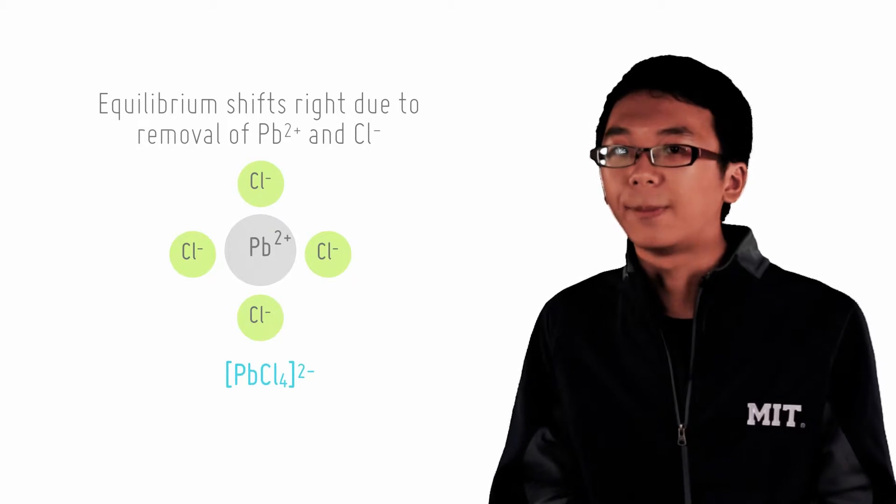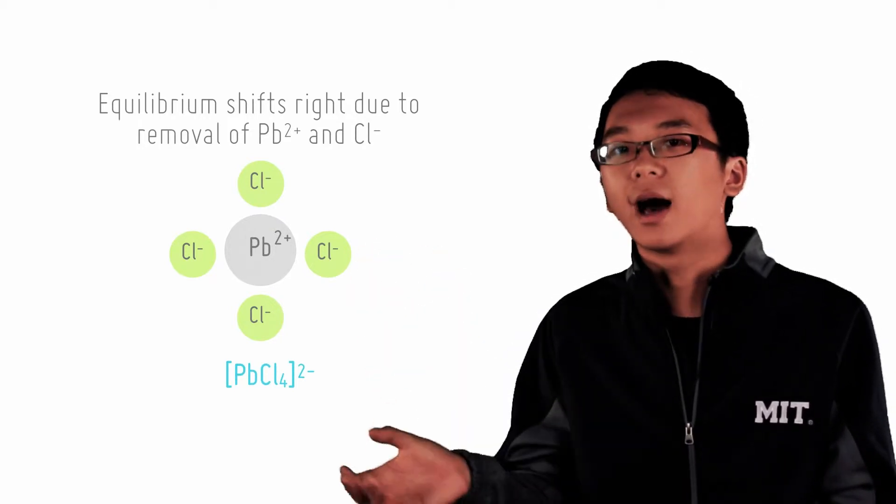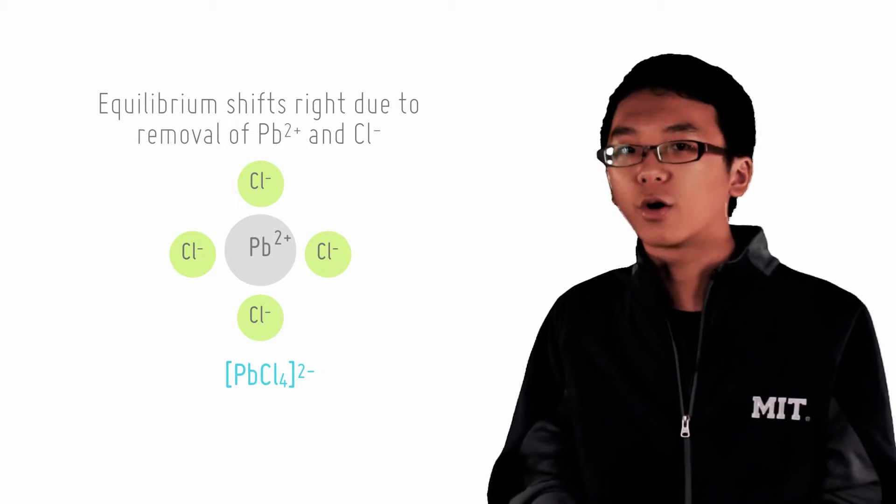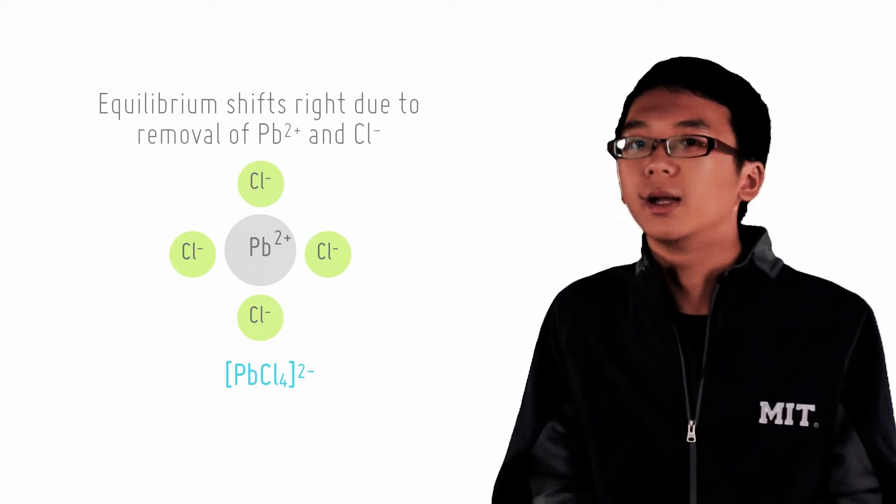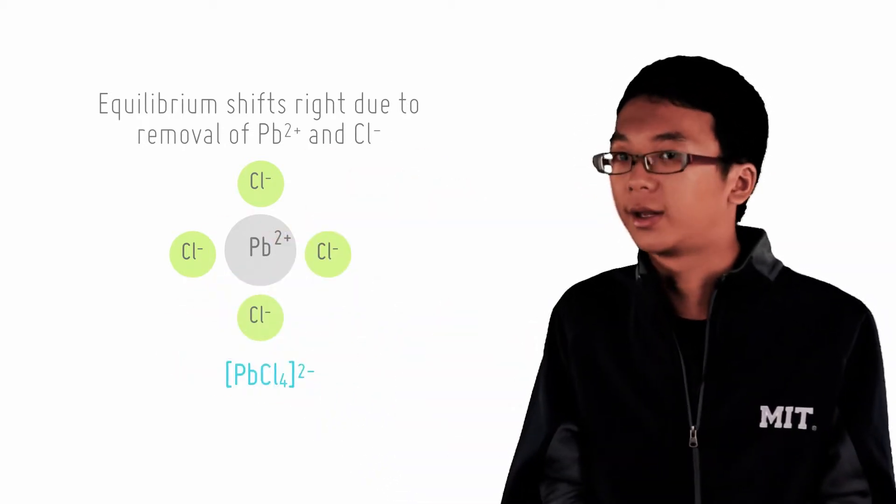This complex is soluble, and because of the formation of this complex, Pb2+ and Cl- are removed from the solution, and the original dissolution reaction, which still occurs, now has its equilibrium position shifted to the right. For another example,